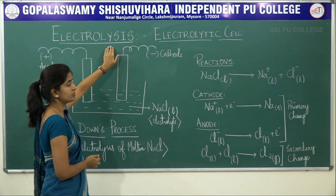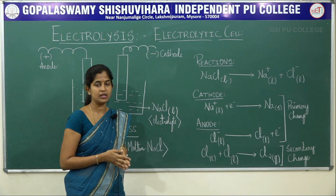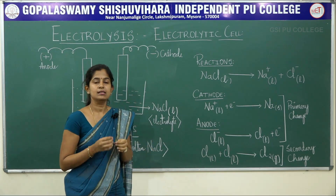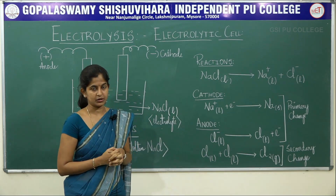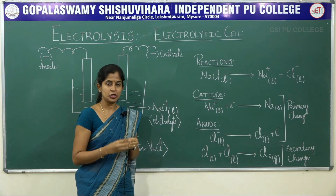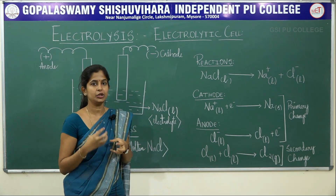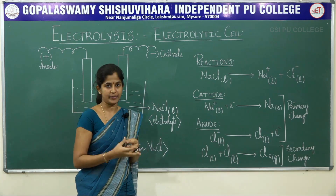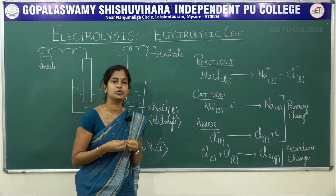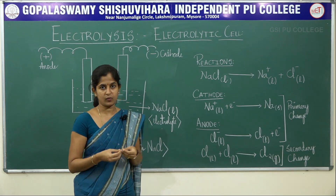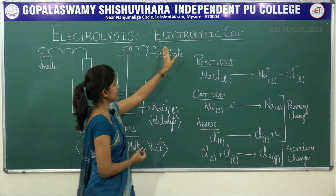An electrolytic cell is a cell in which electrolysis takes place. What do we mean by an electrolysis reaction? Very simply, it is a redox non-spontaneous reaction. You are using some electrical energy to make it happen. Non-spontaneous reactions are reactions which do not happen by themselves — they require some external aid.